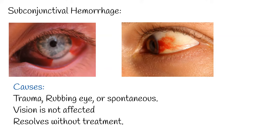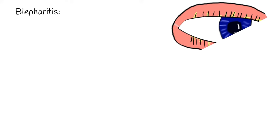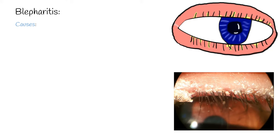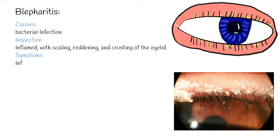Blepharitis refers to inflammation of the eyelids. The eyelid margins are usually colonized heavily by the bacteria Staphylococci. Upon close inspection, they appear inflamed, with scaling, reddening, and crusting of the eyelid. Symptoms include inflammation, irritation, itchiness, a burning sensation, excessive tearing, and crusting and sticking of eyelids.